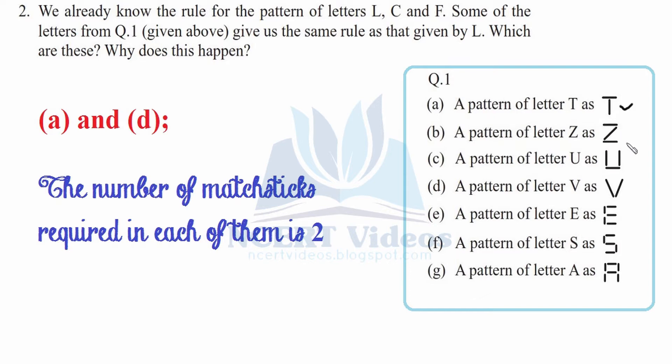For T, we need 2 matchsticks. Therefore, we will use 2N. For Z, it has 1, 2, 3 - this doesn't follow the rule of 2N. This is 3N, not equal to 2N. V, yes, it is made up of 2 sticks. E is more than 2, so we will cross it. Similarly for S and A. So only T and V hold 2N as it was the case for L. We just have to match with L. So T and V is the answer. And why does it happen? It happens because the number of matchsticks required in each of them is 2.